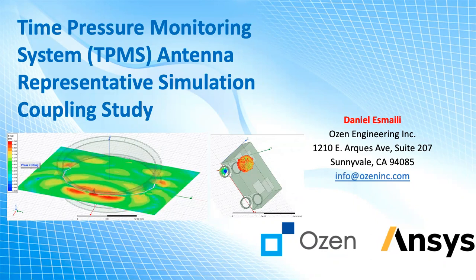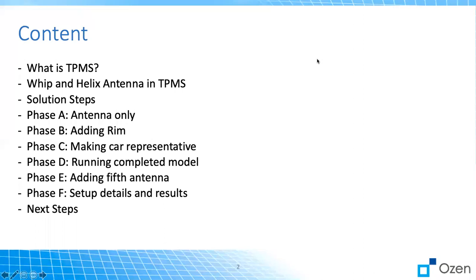In this presentation, we are going to cover a few steps in order to make the completed model. Initially, we talk about what TPMS is and then the whip and helix antenna, the solution steps, different phases that we had to make the model completed. And at the end, we'll show the result as well as some setup of the model and then we'll explain what the next step is, which is using the EMIT software to calculate some link budget.